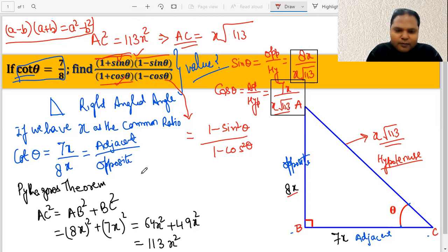So it is like 1 - sin²θ means this whole thing, and here we can cancel x with x, so it will become basically 8/√113 and the whole thing squared, divided by 1 - cos²θ, so that's going to be 1 minus - that's like 7/√113 and the whole square.